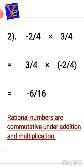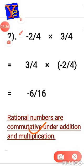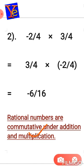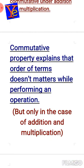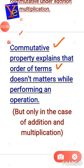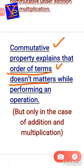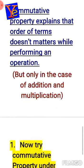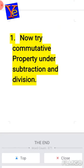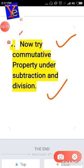Commutative property holds under addition and multiplication. But when we go to subtraction and division, will we get the same answer if we switch the numbers? Think about it — we'll discuss it later. In summary, the commutative property tells us that the order of terms doesn't matter while performing an operation, but only in addition and multiplication. Try commutative property under subtraction and division — we'll discuss it later. Thank you!